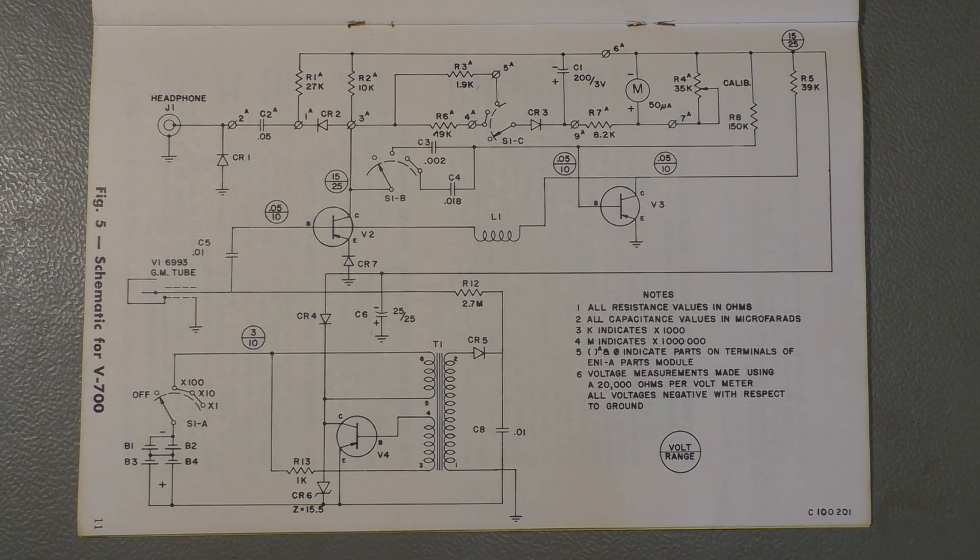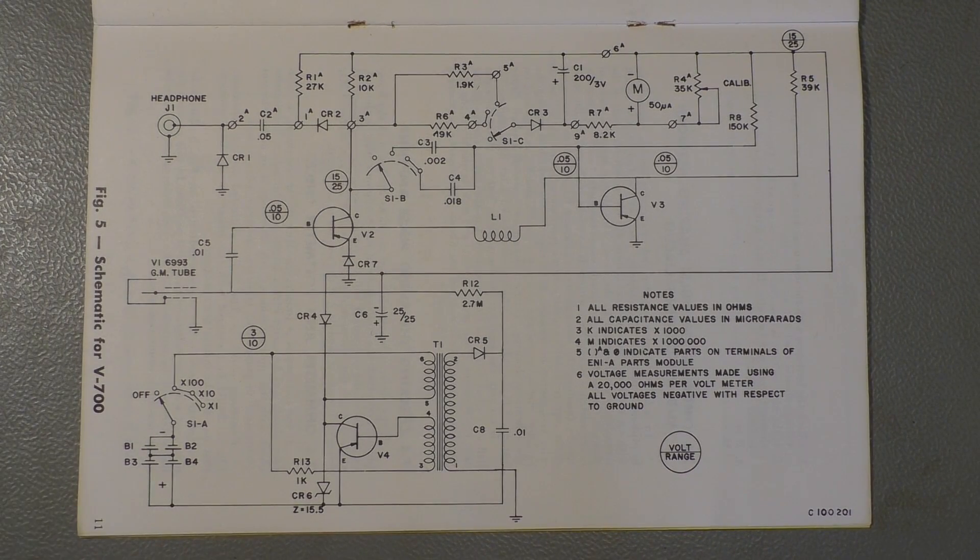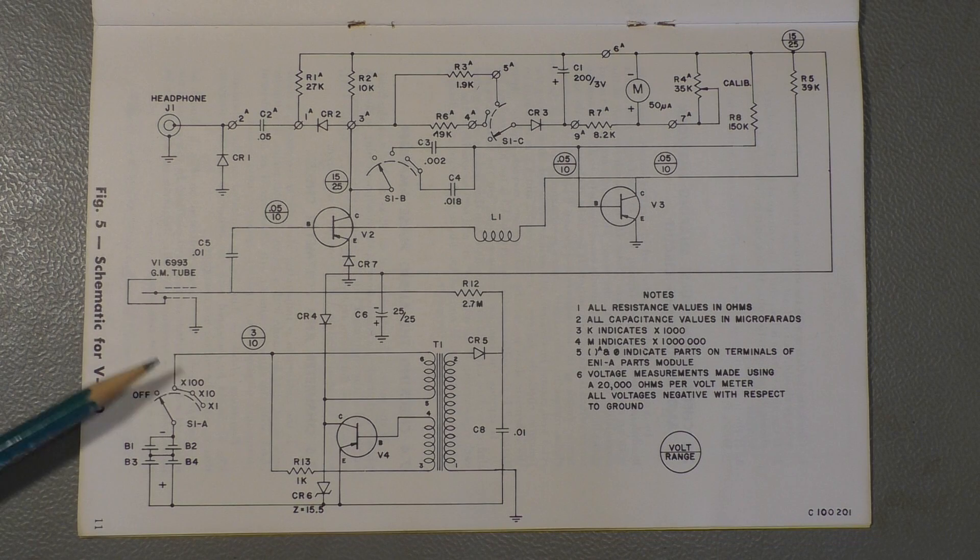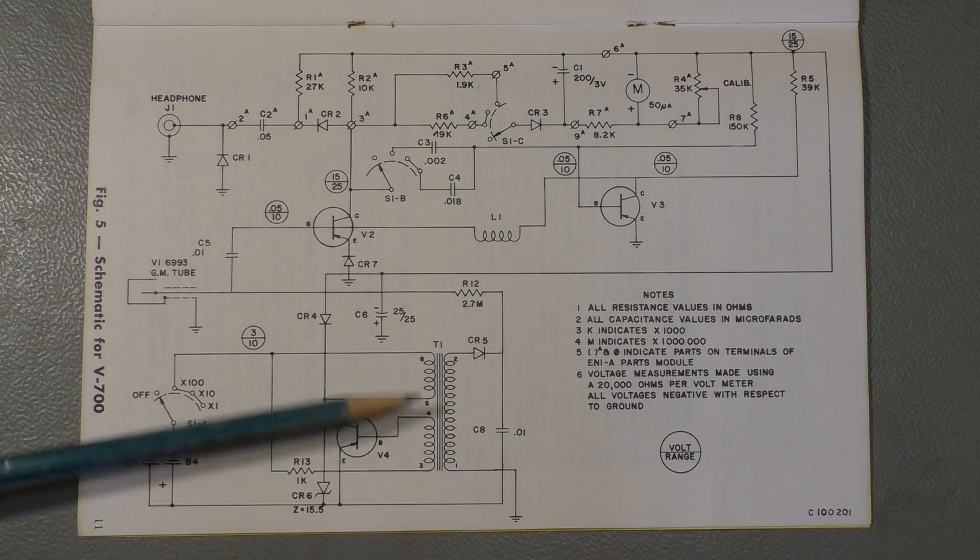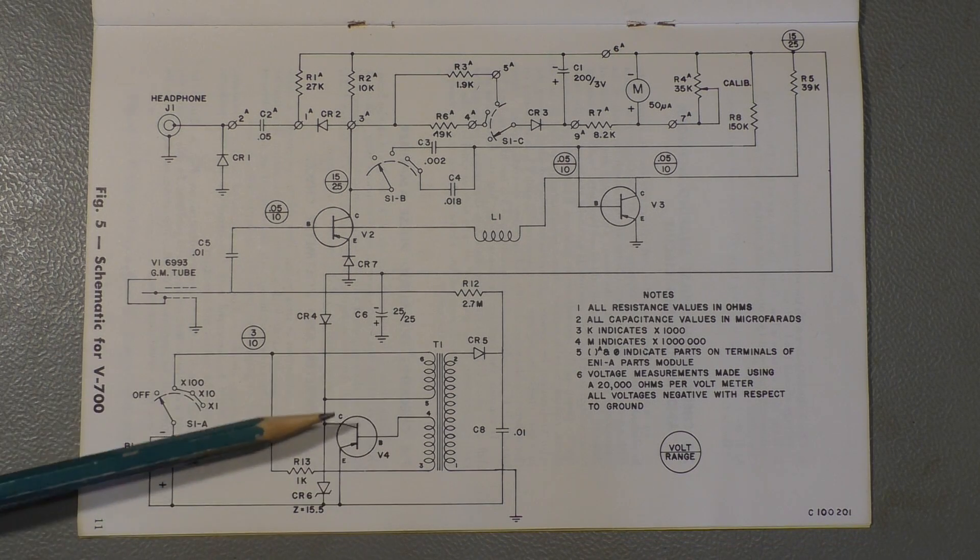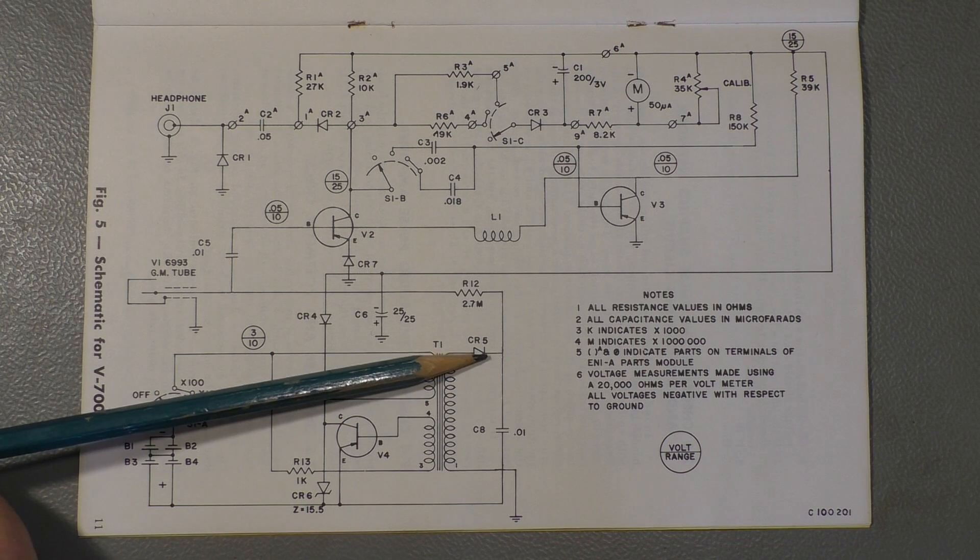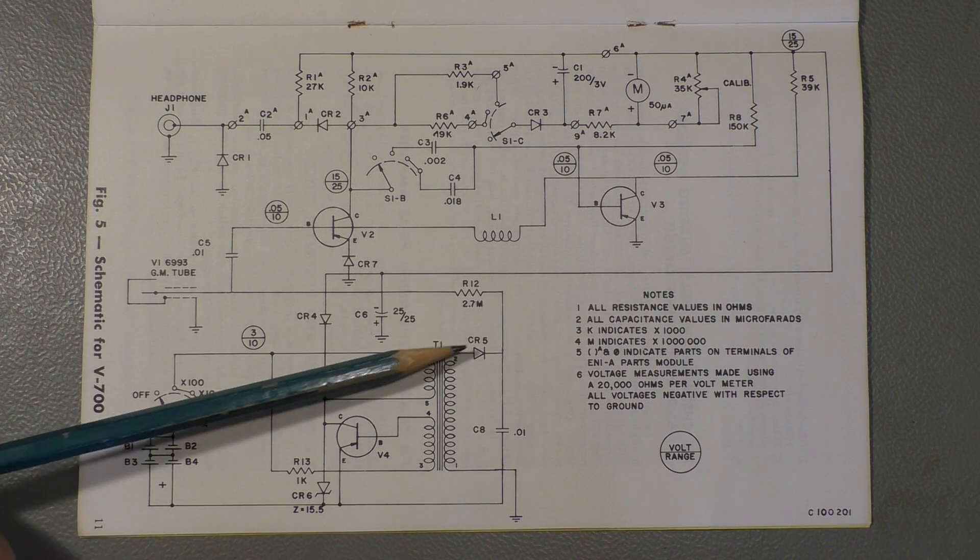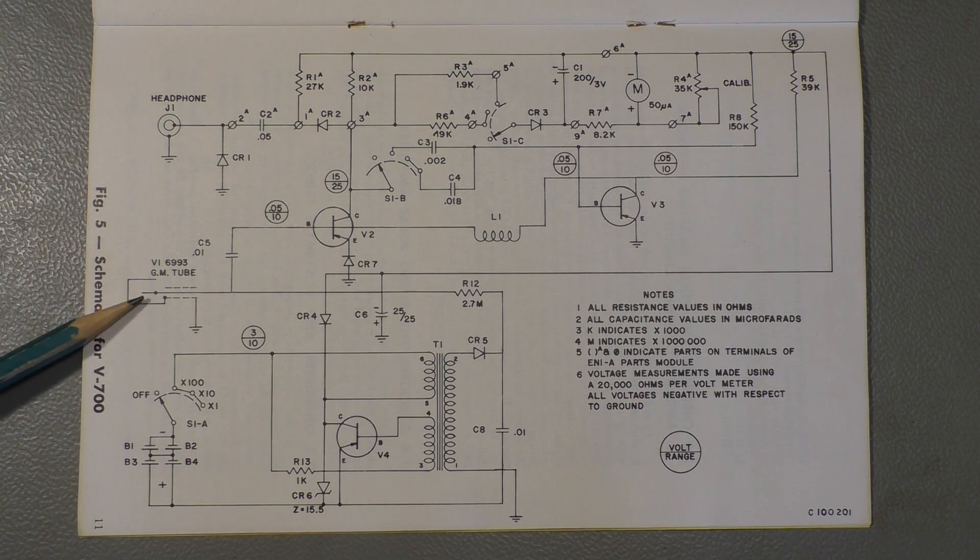Let's have a look on the schematic diagram. We have the batteries down here with the first stage of the switch, which is simply an on-off function. The power goes to this oscillator circuit here. And through that diode, a positive voltage is supplied to this Geiger-Müller tube here.